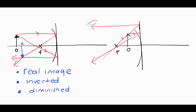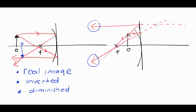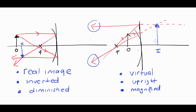What you'll notice is that the two reflected light rays will not come together to form an image on the front side, which means the image must be located on the virtual side of the mirror. To locate the image, we dot back the reflected light rays — that's really important. Where the reflected light rays appear to come together behind the mirror, this is the location of the image. In this case, the image is described as being virtual, upright, and magnified, because the image is clearly larger than the original object.